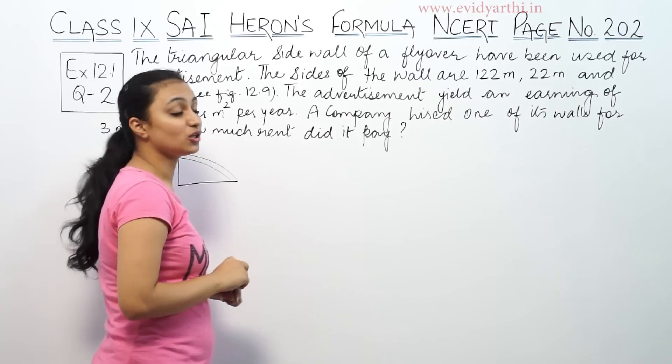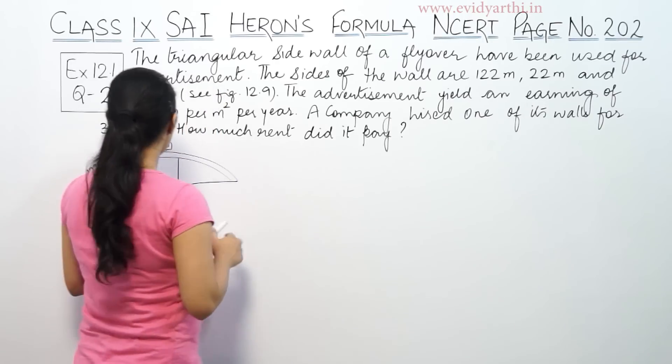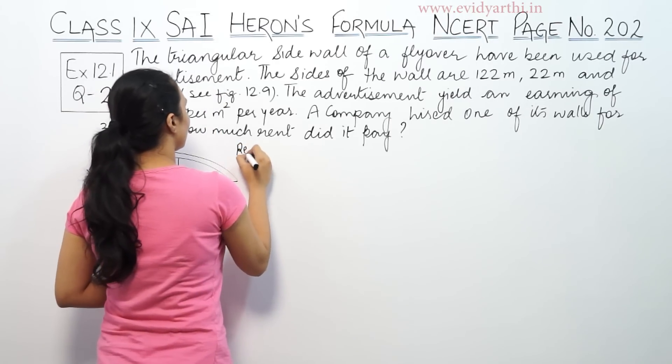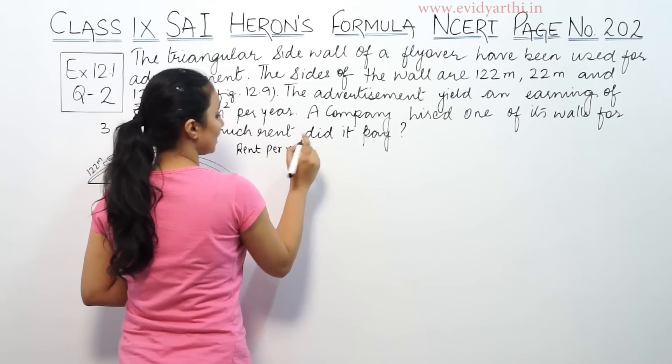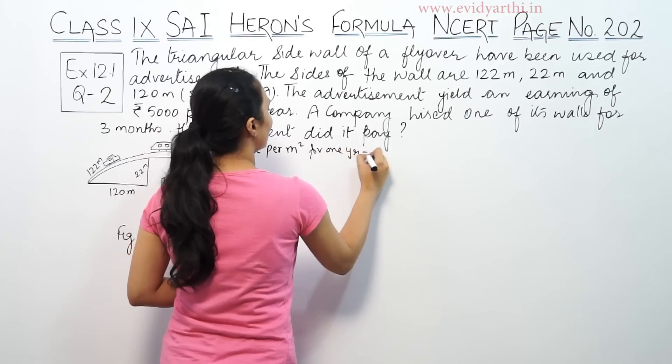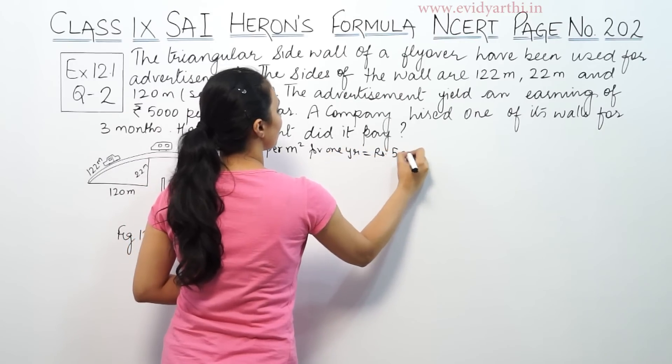So how much rent did it pay? So we need to find this. Here we go to solve this. This is the rate for 1 meter square. For one year, it is 5000 rupees.